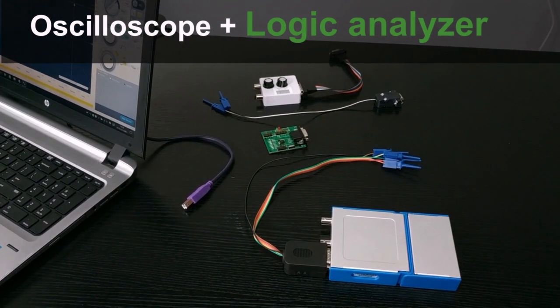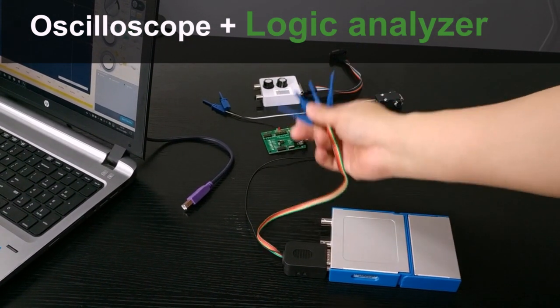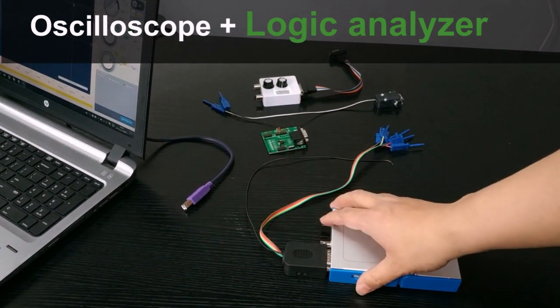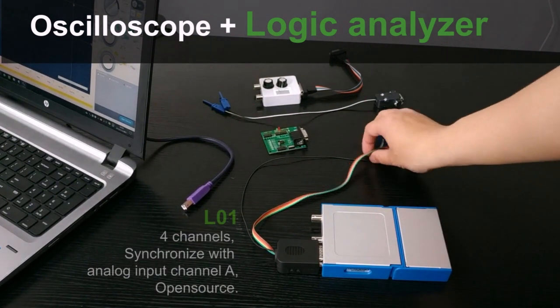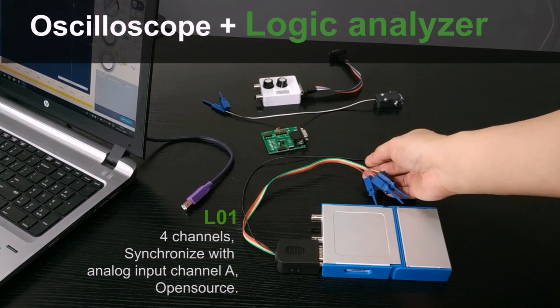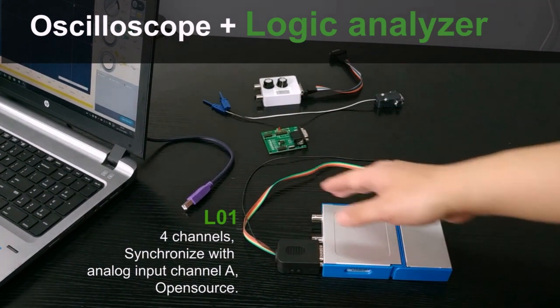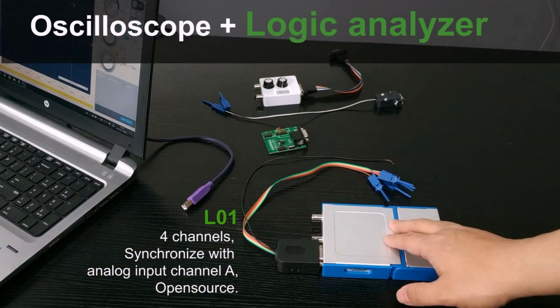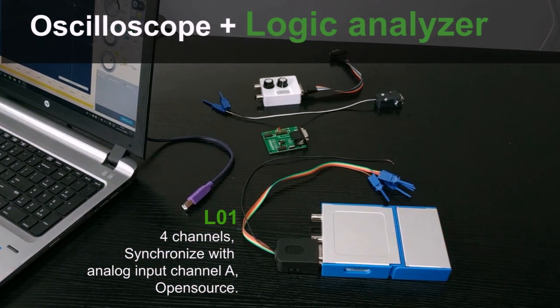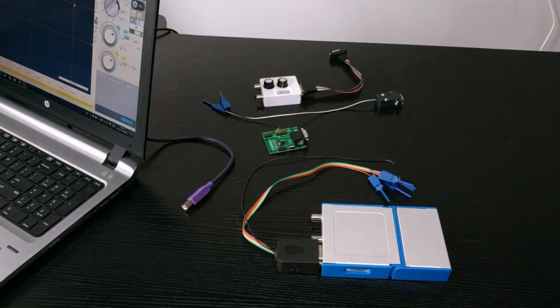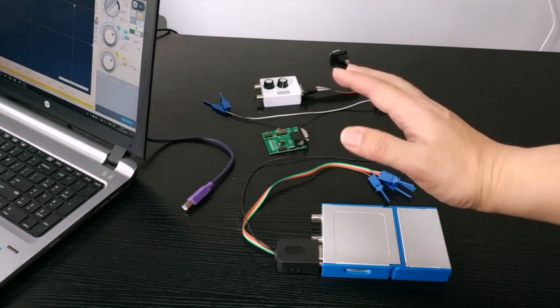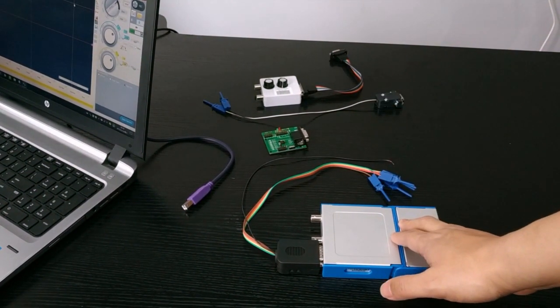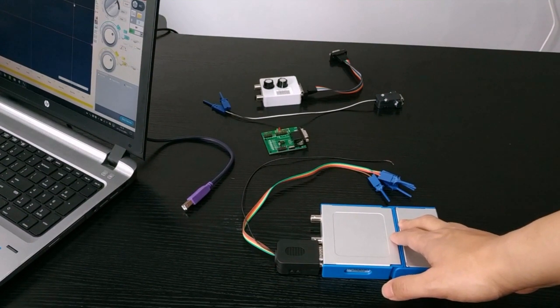By connecting the analog channel of the oscilloscope to the reference signal we can already see this signal on the software. We can see it is a 1 kHz signal.